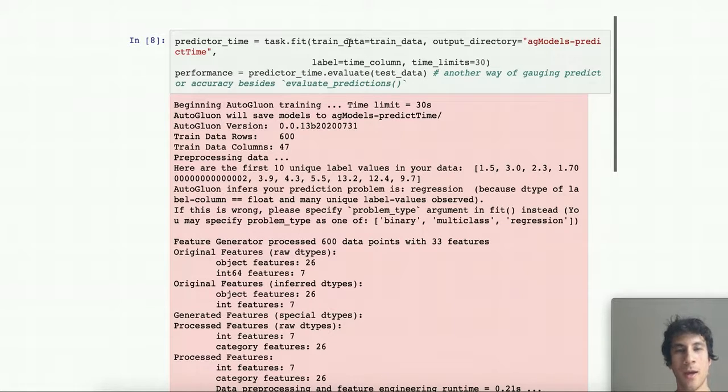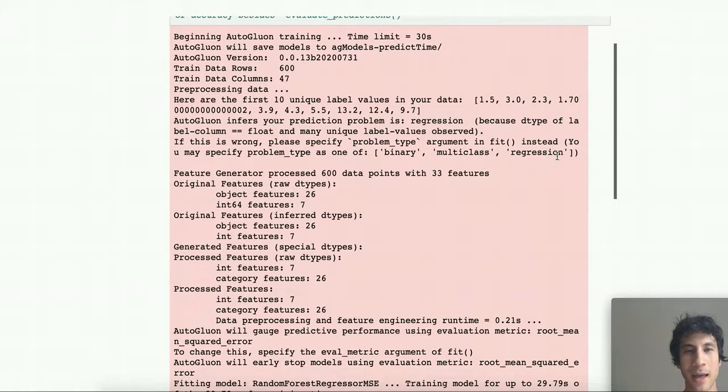And again, we just call task.fit to produce a predictor. We don't need to specify regression or anything like that. Here we just provide the training data, a new output directory where we want to store this new predictor. We specify which is the new target column. And another thing that's different here is we specify time limits for AutoGluon. We tell it it should only run for 30 seconds and within 30 seconds be able to be ready to produce predictions. Finally, we evaluate the resulting trained predictor on the test data. Here we show a shorthand method evaluate that takes in labeled test data in this case, and internally will call predict and score. Now let's look at the output logs from this run.